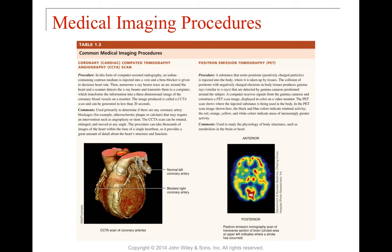A cardiac computed tomography angiography scan combines a CT scan and an angiograph. Iodine is injected intravenously and X-ray bounces off it, generating a three-dimensional image of all coronary blood vessels — not just the heart itself but all surrounding vessels. This quickly determines blockages such as plaque or calcium deposits where blood flow is restricted, allowing physicians to decide whether a stent or bypass is needed.